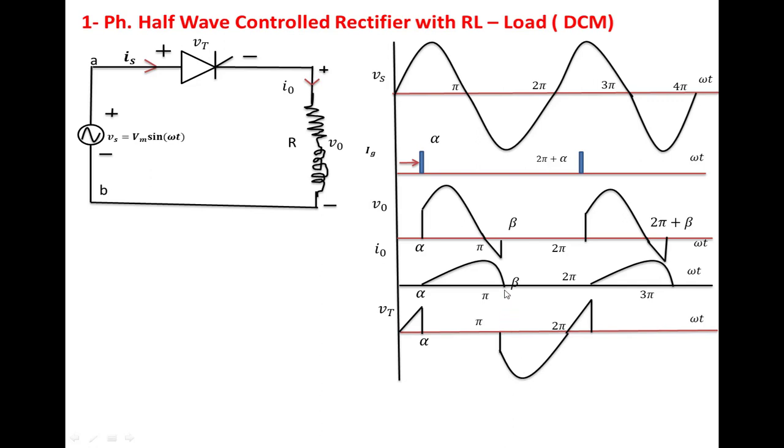Once the SCR is off, the voltage across the SCR becomes the same as the input voltage. From β, we observe the magnitude of the input voltage: it suddenly rises to a negative value, reaches the peak value, and at 2π it comes to zero again for forward bias.